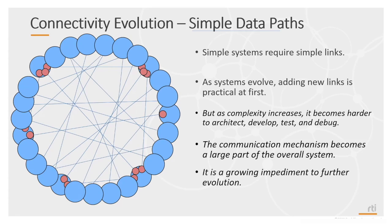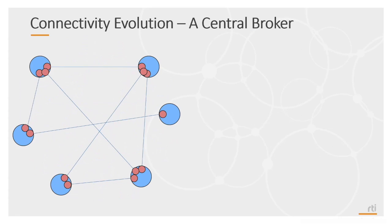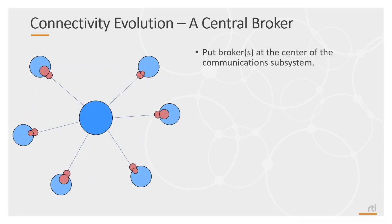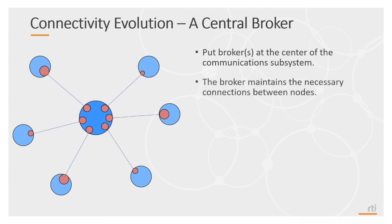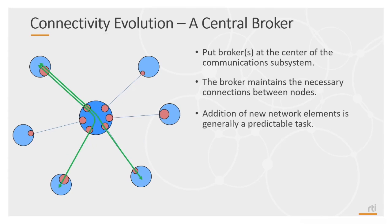A first-order solution is to add a broker at the center of the communication subsystem, maintaining all connections between nodes. Although the addition of new nodes is a predictable task, this creates a single point of failure and can face scalability issues.